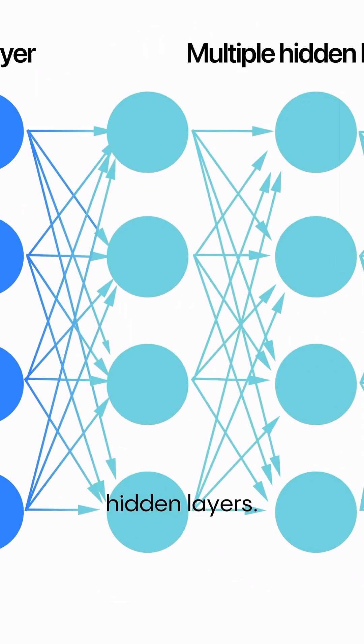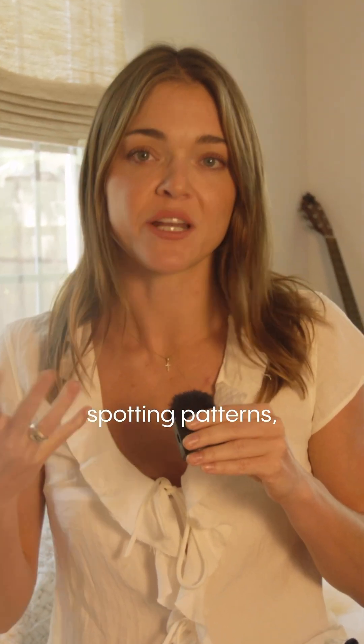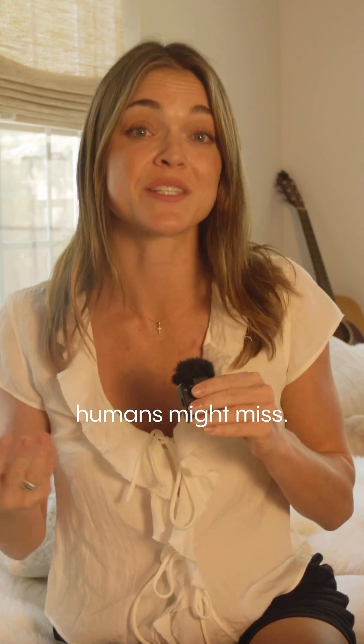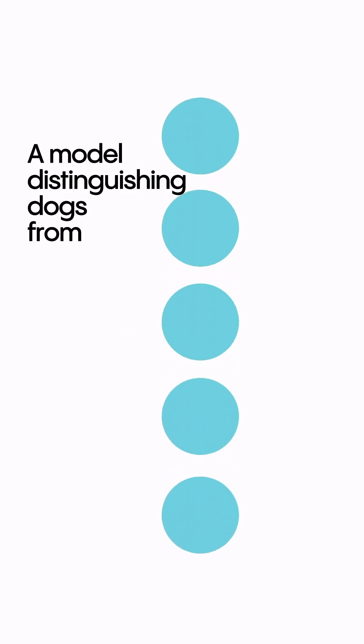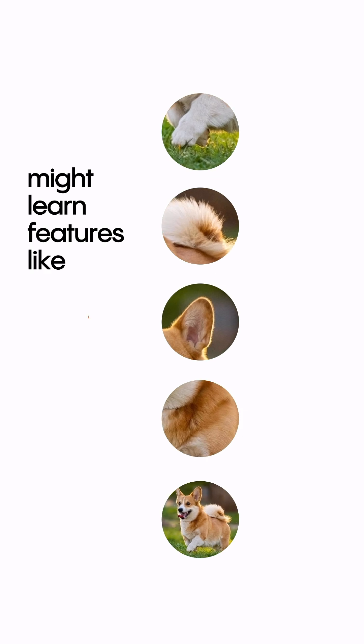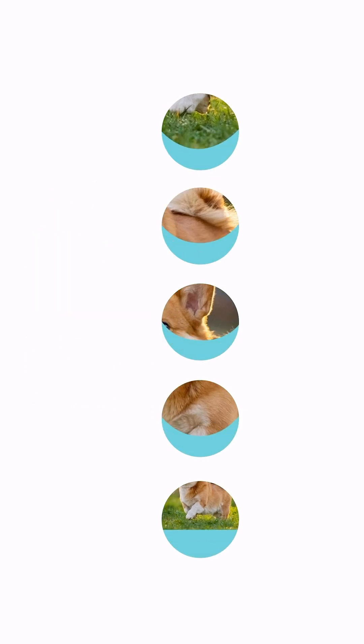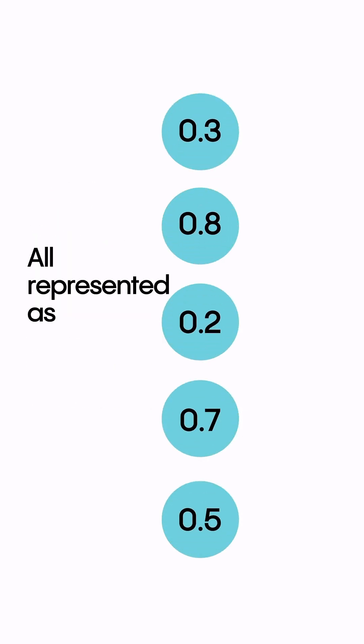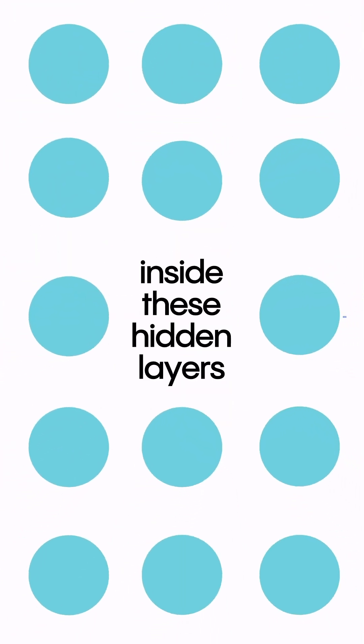In the middle are the hidden layers — this is where the magic happens. Each neuron transforms and combines information, spotting patterns, including ones that humans might miss. Over time, these layers, which consist of neurons, learn features in the data that help the model make decisions. For example, a model distinguishing dogs from cats might learn features like pointed ears or fur texture, all represented as numbers inside these hidden layers.